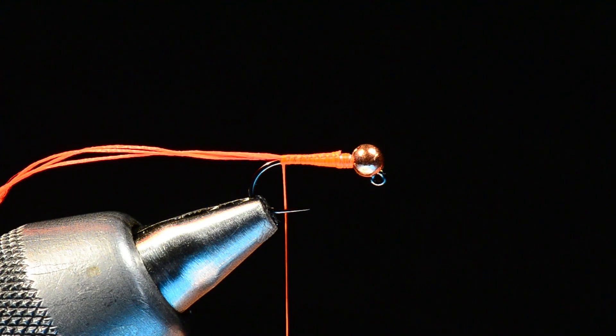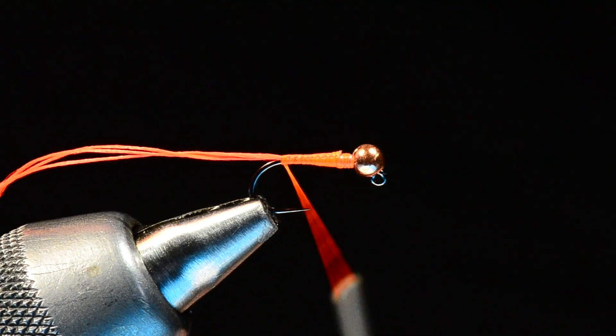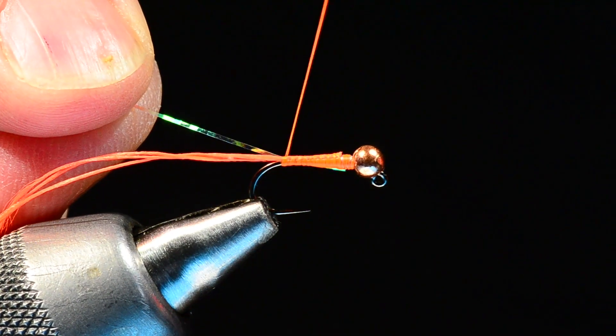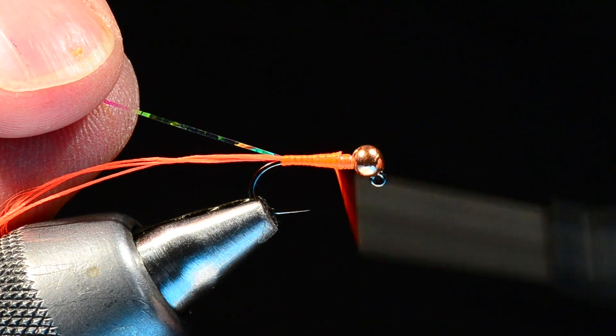Now for the ribbing, I'm going to use a piece of Mirage Flashabou. I'm going to tie this in on my near side of the hook. Since my thread's hanging at the back, I'll just lay this in at an angle on my near side. I want that tag end to be short of the bead and I can secure it down as I come forward with the thread.